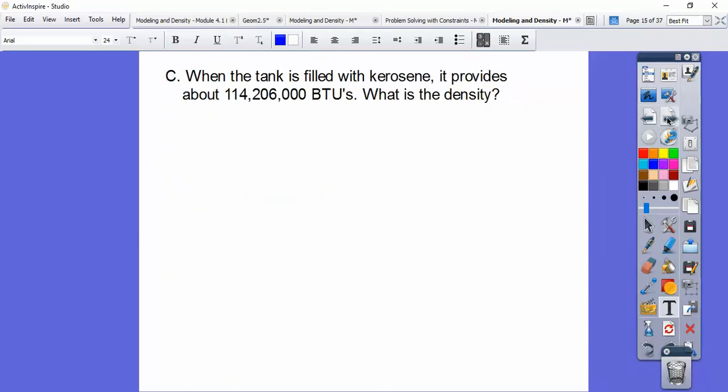Here's the same tank. It's filled this time with kerosene, and when it's filled, it provides about 114,206,000 BTUs. So what is its density?